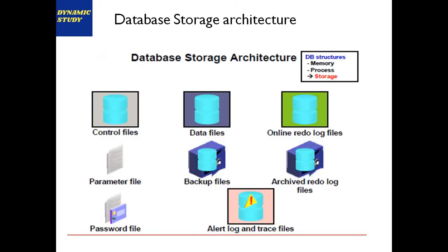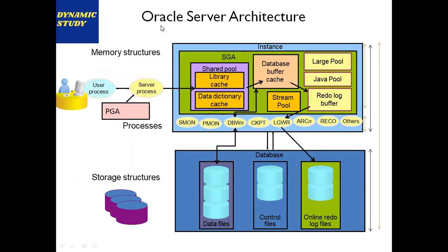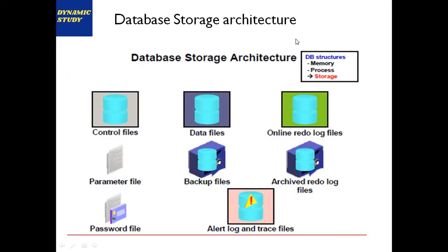Now for database storage architecture: the Oracle database server is a combination of instance and database. The instance is a combination of SGA and background processes. The physical database contains physical files stored on disk. Control file contains key information — how many data files are available, the current sequence number (SCN) of the database, and other structural information. Data files hold all actual data of the whole database, including tables.